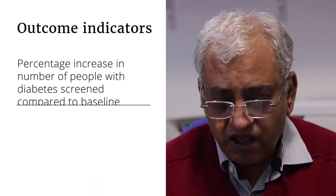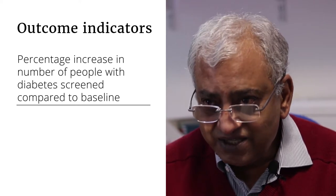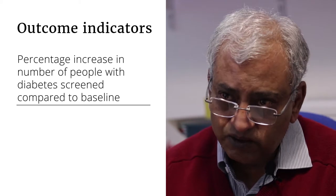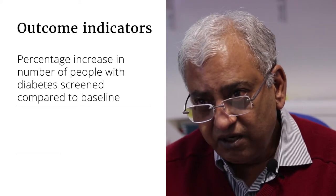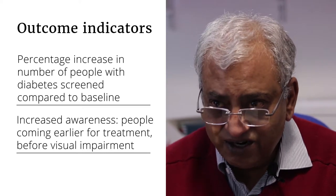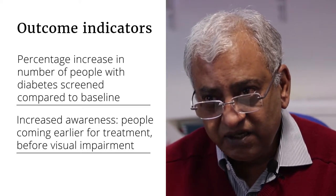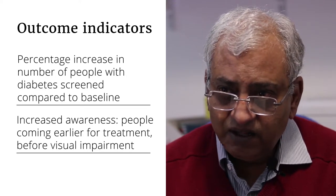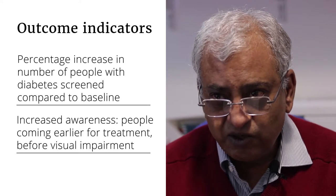In terms of the outcome indicators, our major interest was to see whether the program was making a difference to the way things were being done before the program. One of the outcomes we were looking at was whether there was an increase in the number of people who come for screening compared to the baseline. The second was whether people were coming earlier when they had diabetic retinopathy, so that the numbers who would be visually compromised or go blind would decrease over a period of time.